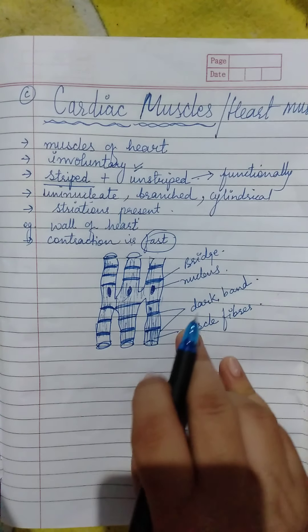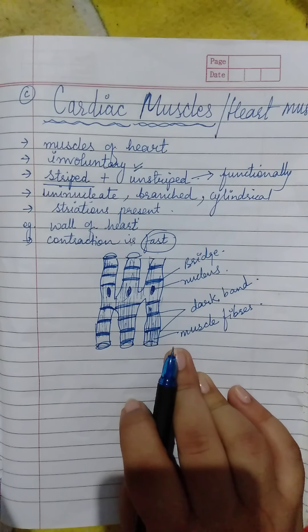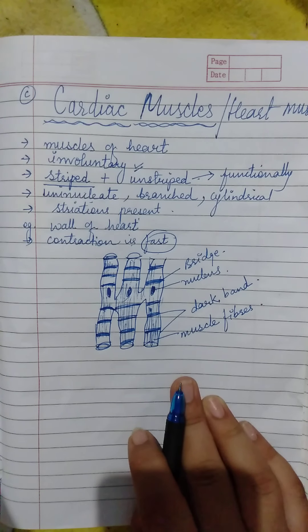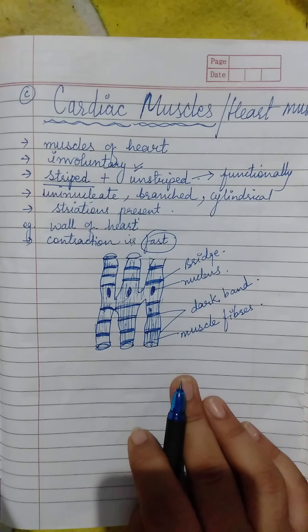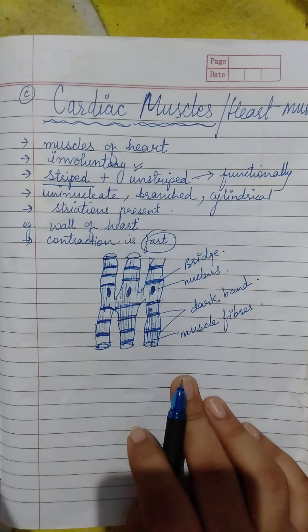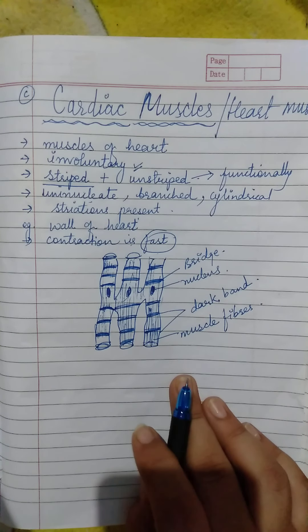Cardiac muscles are present in the wall of the heart and their contraction is fast. So this is all about cardiac muscle. In the next lecture, we will discuss about nervous tissue, which is the last tissue in our series. Thank you, students.